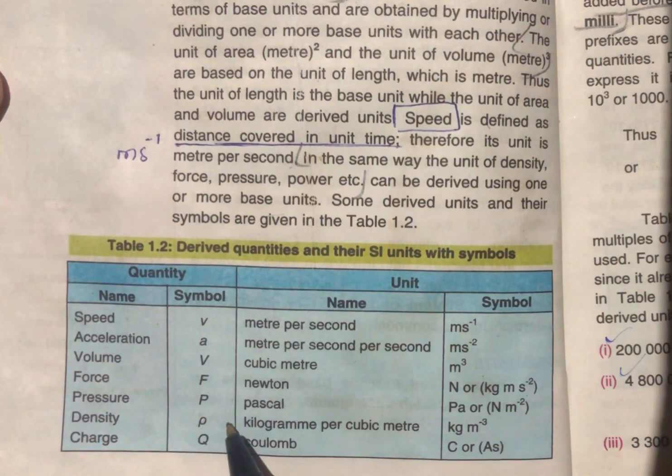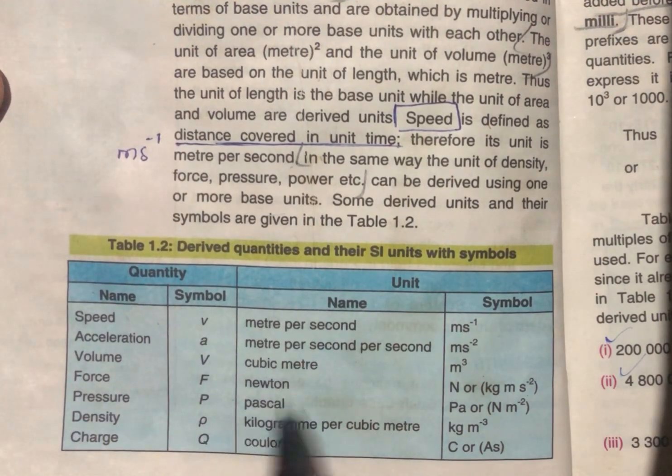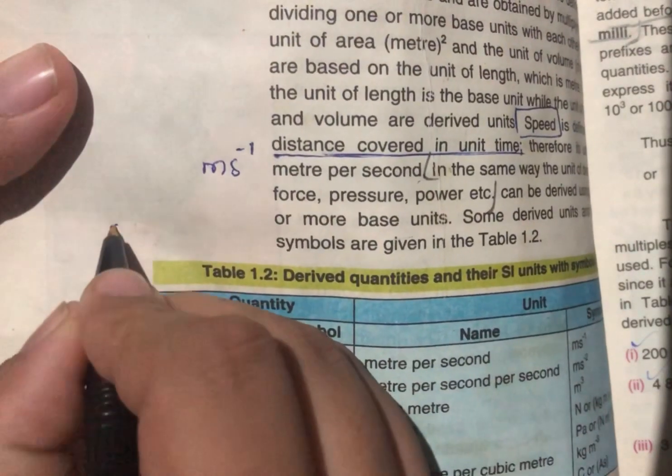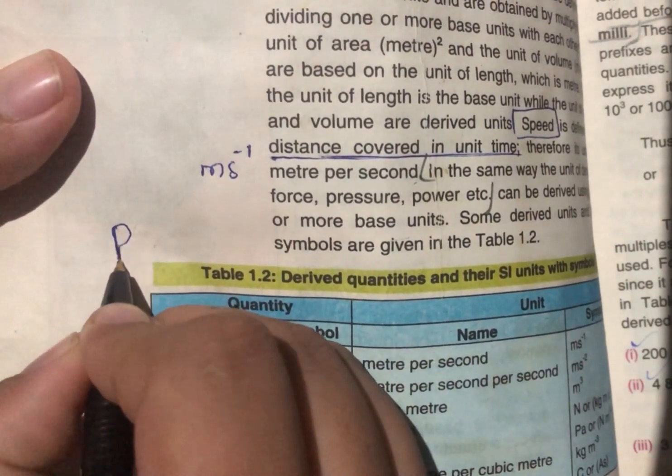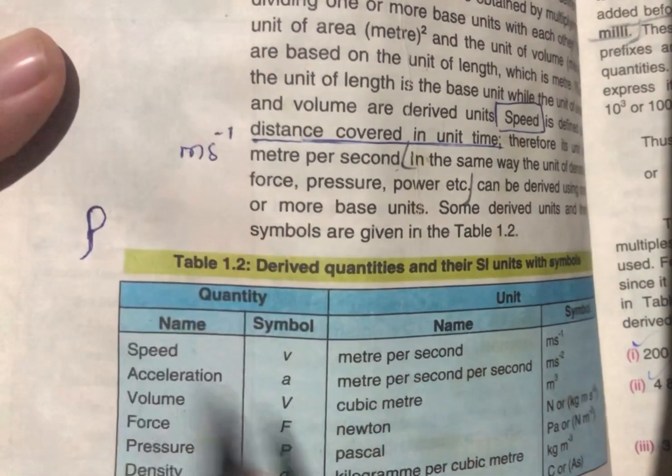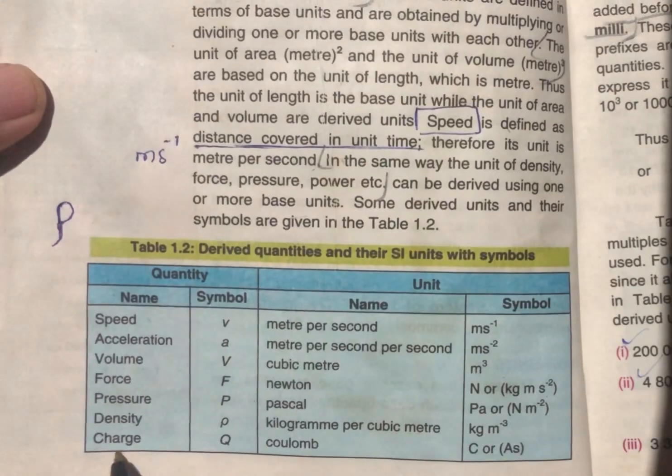Rho. This is P for pressure and this is Rho for density. Charge Q.